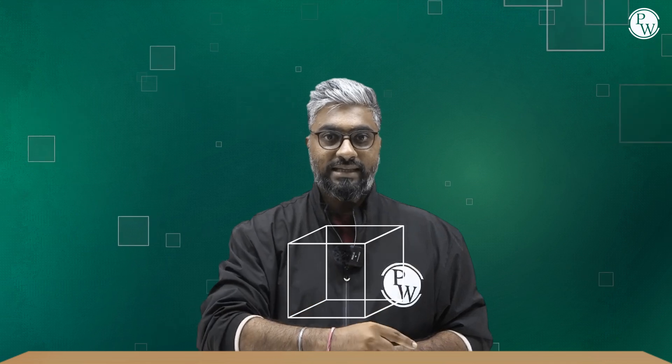Along with this, we also have 8 corners. Corners are nothing but where 3 edges meet. These 3 edges meet at a point — this is called a corner. So we have 8 corners: 4 on the top and 4 at the bottom.